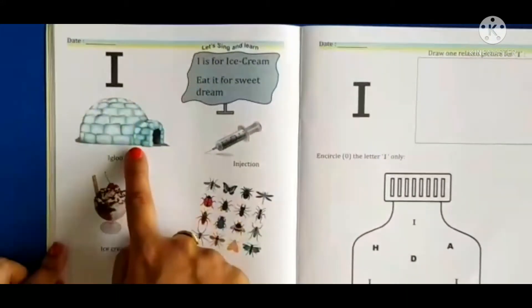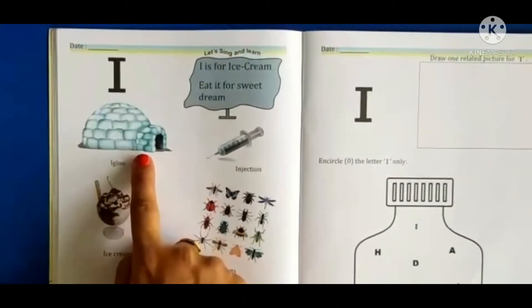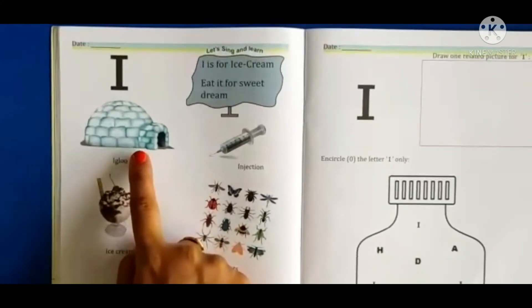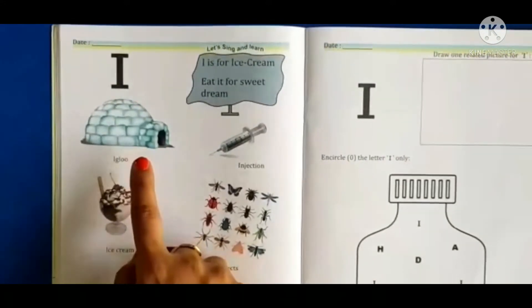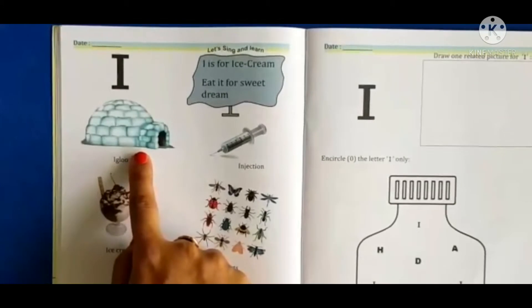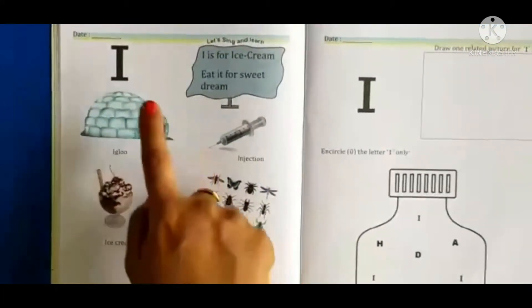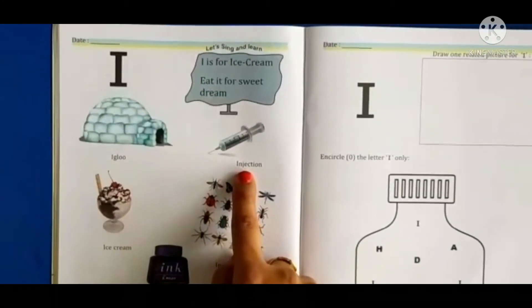I for igloo. It is a house made up of snow. I for igloo. I for injection.